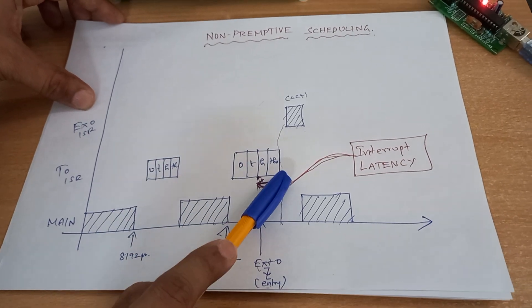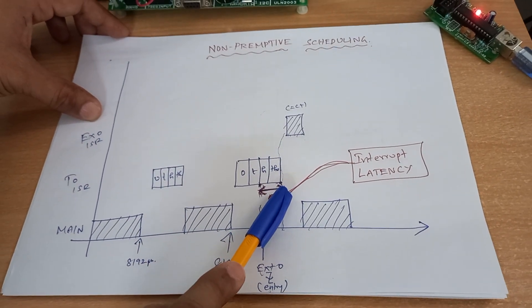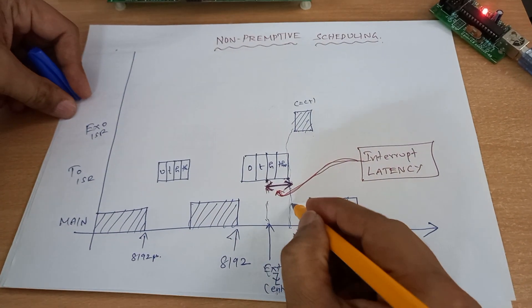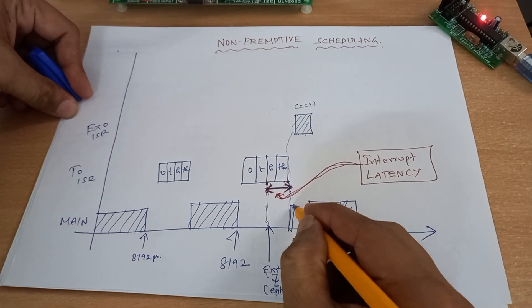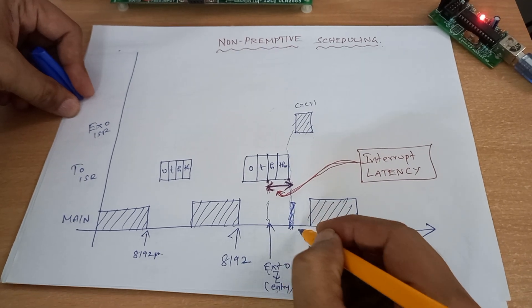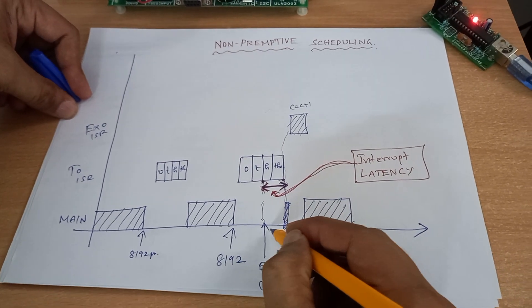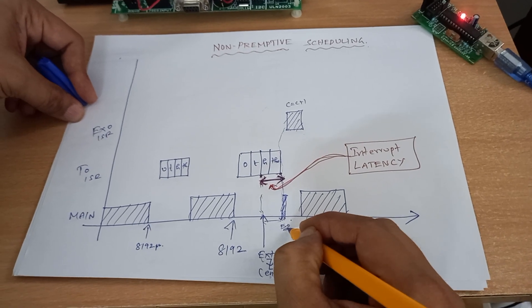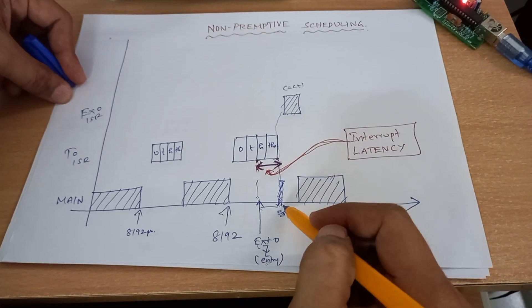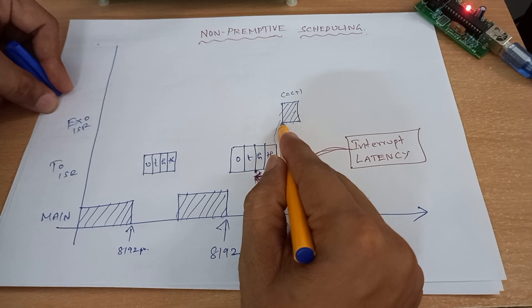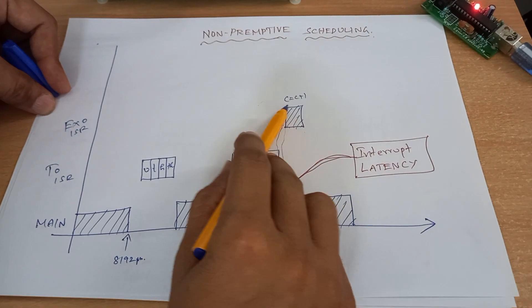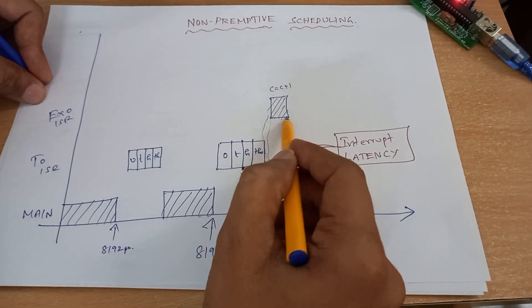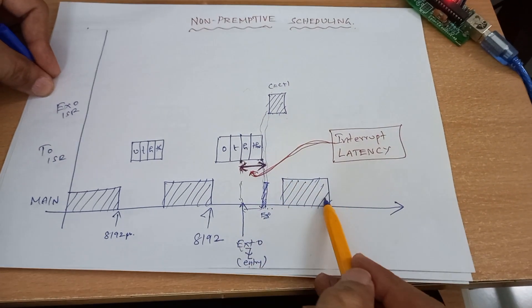After servicing the interrupt, timer 0 returns from the ISR and comes back to the main routine. In the main routine, it runs one instruction. After executing that instruction, it polls for interrupts. While polling, it understands that external interrupt 0 flag was set, so it goes to the external interrupt 0 ISR, increments the count where one person has entered, then comes back to the main routine and continues.